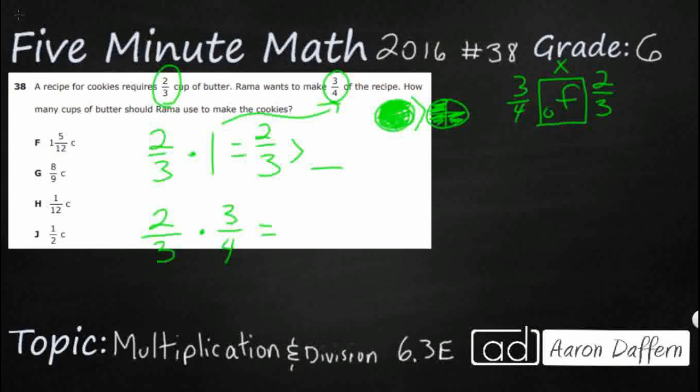So we're going to go two times three, that makes six. And then three times four, that makes twelve. So it seems like it's pretty simple here. My answer is six-twelfths. Until we look over here at the answers on the left and we don't see six-twelfths.